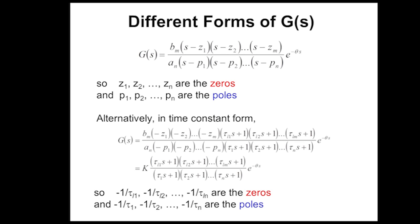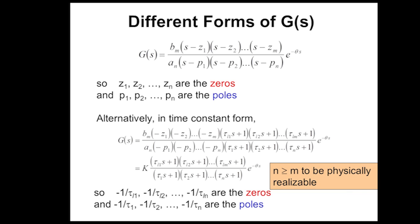We can also put this into a form called time constant form. This is very familiar from first-order and second-order systems, where you have these time constants. In this case you have multiple time constants in the denominator. This is an alternate form where you can have a gain and then your time constants for each of your roots. One important thing to realize is that the order of the polynomial in the denominator has to be greater than or equal to the order of the polynomial in the numerator. Otherwise, it's not a physical system that can actually be implemented in practice.